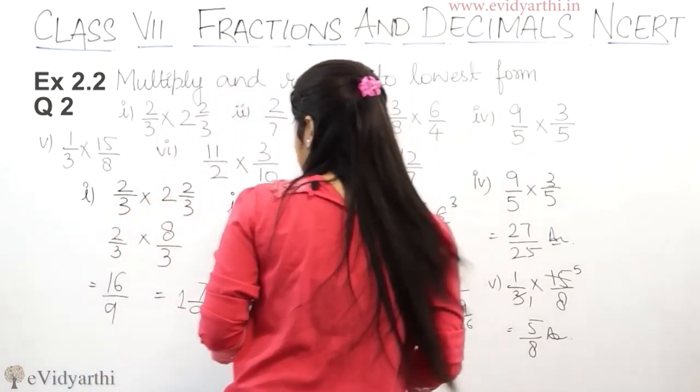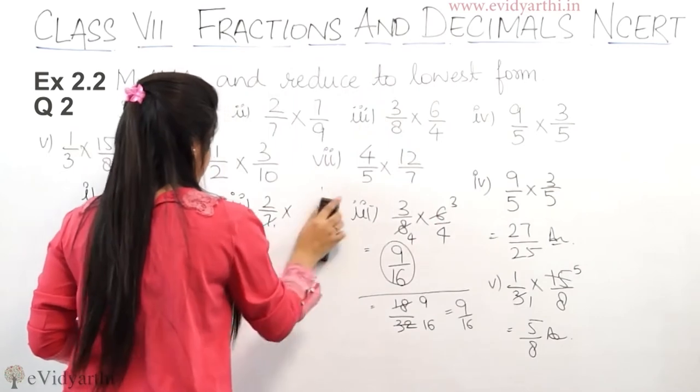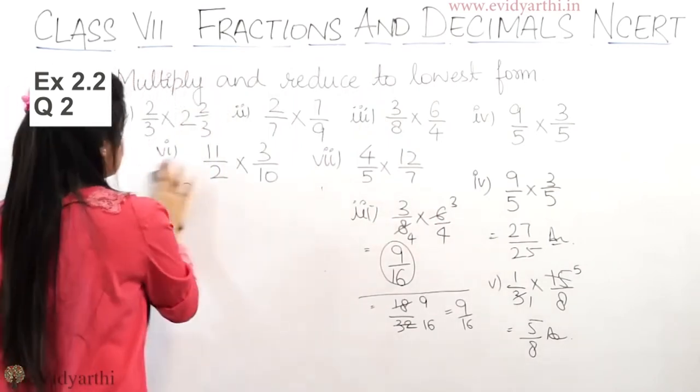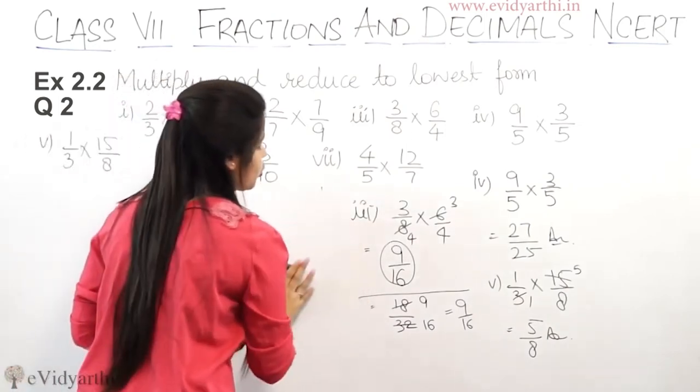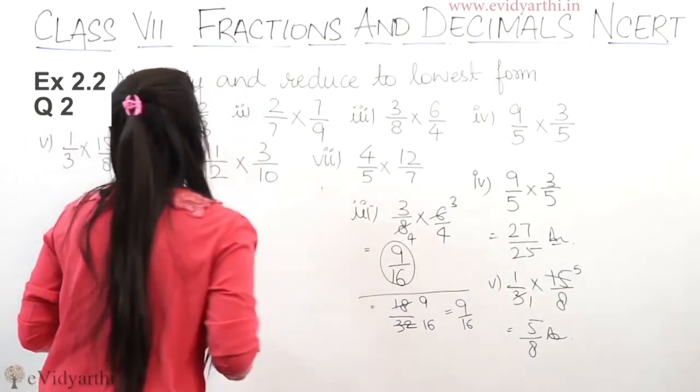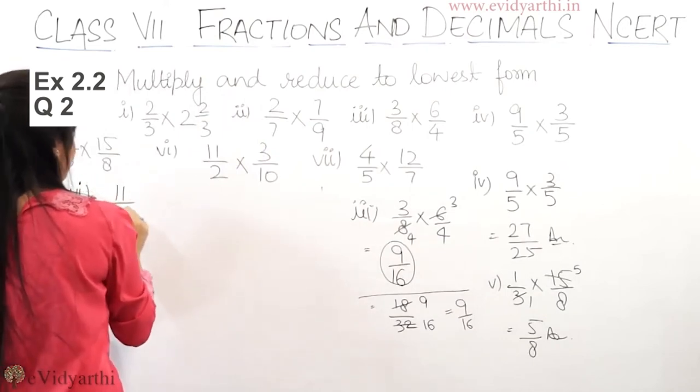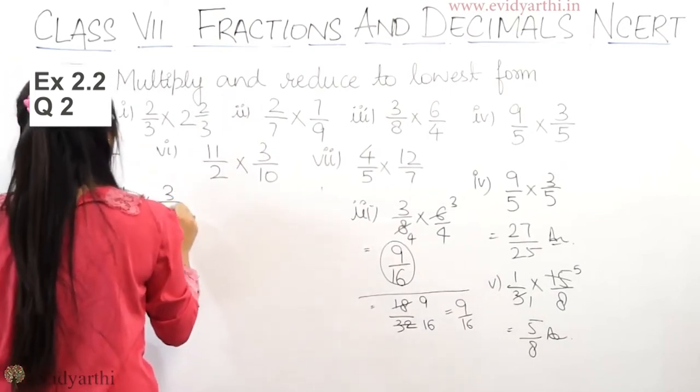Now let's come to the 6th part. So I will write your answers and you will do it. So in 6th part we have 11 upon 2 and 3 upon 10.